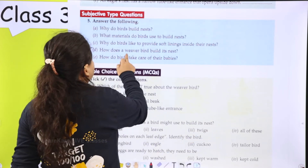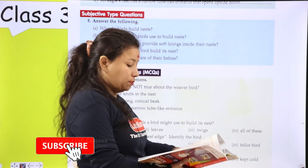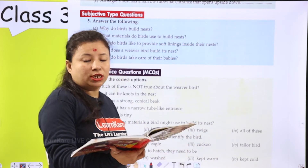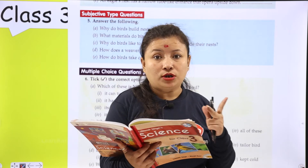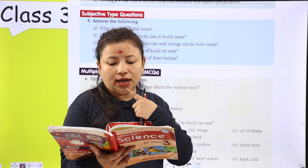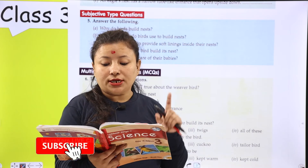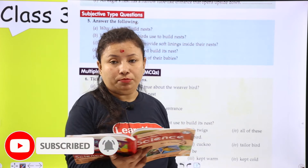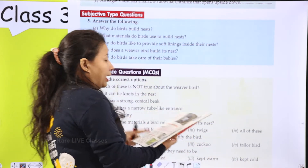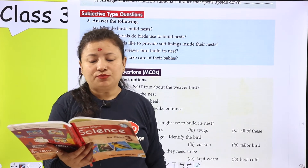Number 4 is how does a weaver bird build its nest? Jho weaver birds hoti hai, woh apna nest kaise banati hai? A weaver bird has a strong conical beak which it uses to cut blades of grass for nest building. It can tie knots in the nest material with its beak and its feet. The nest also has a narrow tube-like entrance that opens upside down, and it is very hard for a predator to get inside the nest through this entrance.